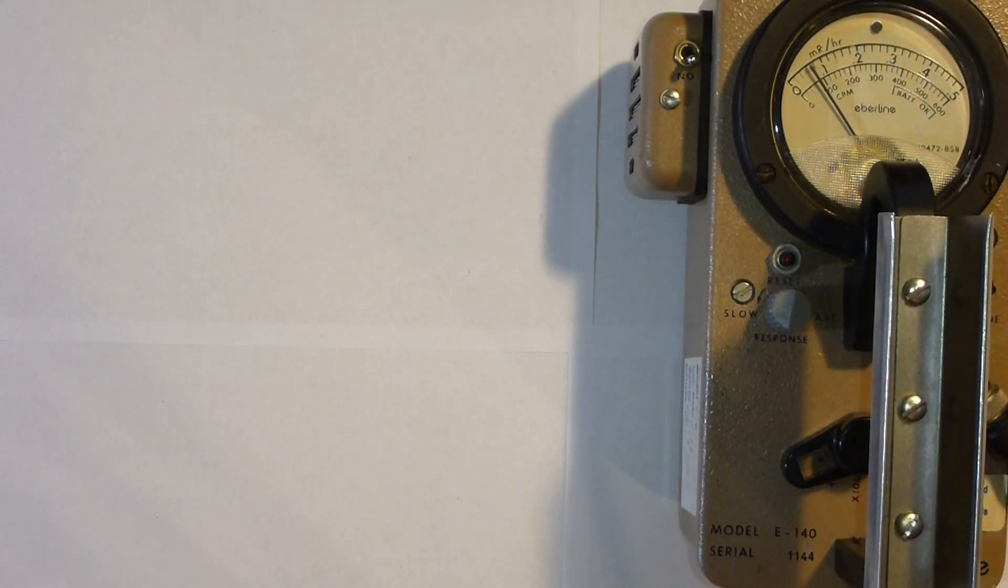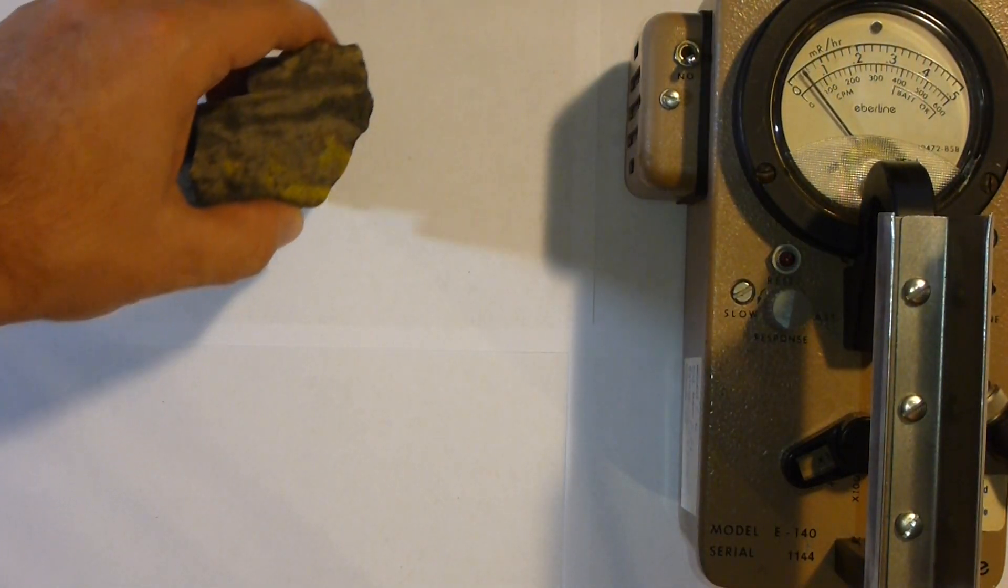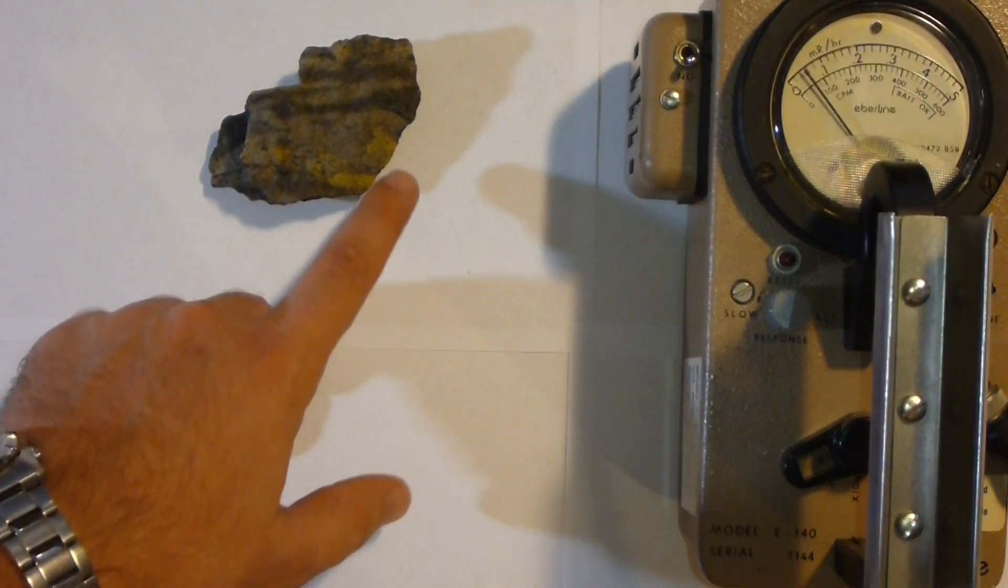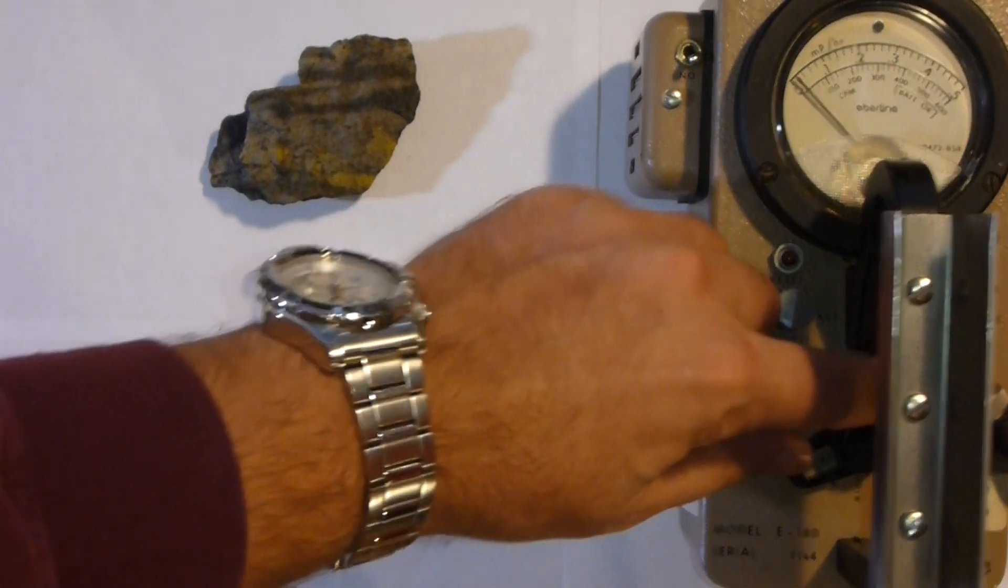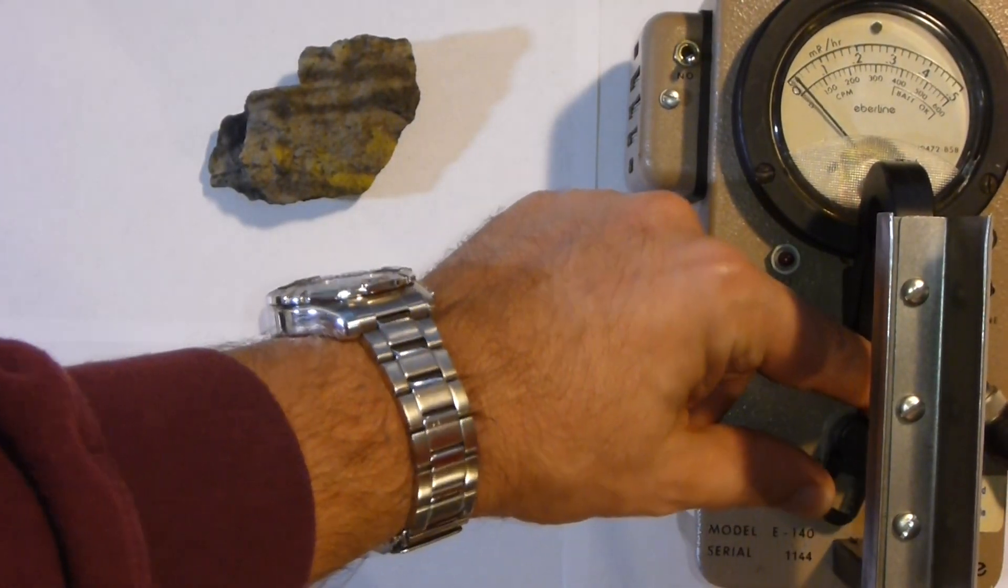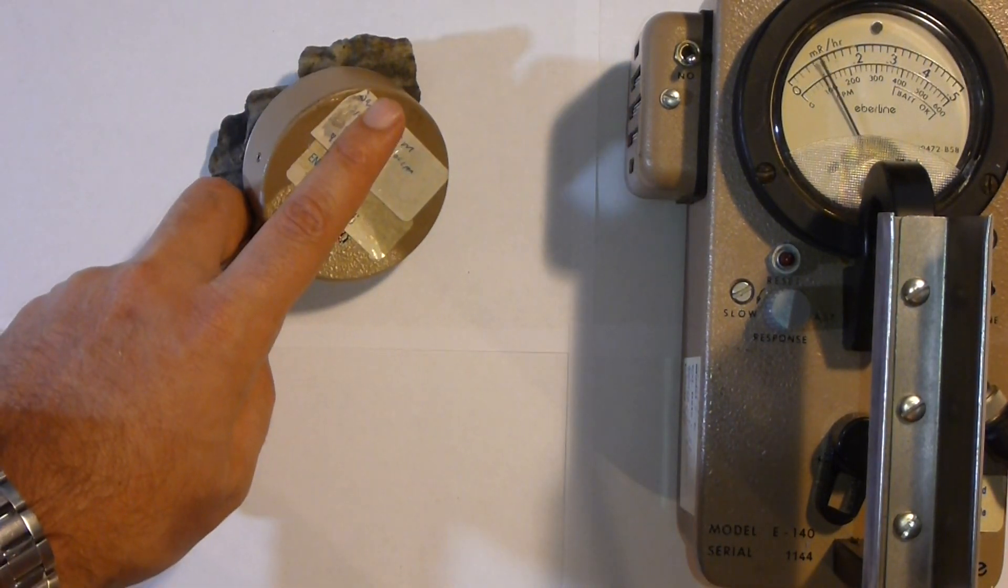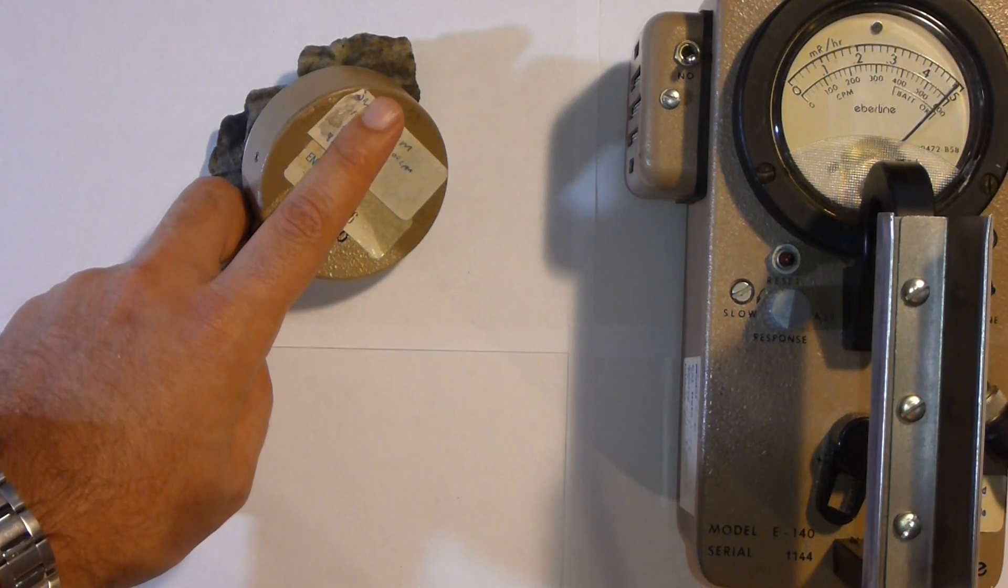Next up, here's a piece of uranium ore. This is a sandstone-hosted uranium oxide. The uranium oxide is the yellow grungy stuff in there. I'm going to switch up the scale on this to a factor of 10 and put the probe right on there. So that is reading about 4 to 5, maybe a little bit higher millirem per hour.